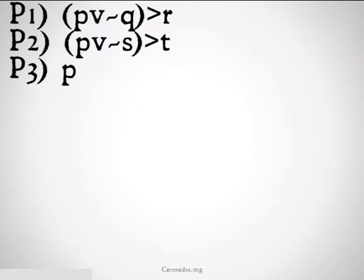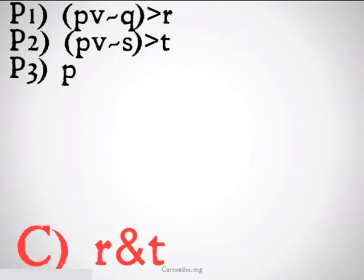Our next question was premise one: P or not Q implies R; premise two: P or not S implies T; and premise three: P. We want to conclude from this R and T. Pause the video if you want to work on it on your own right now, but I'm going to plow forward.